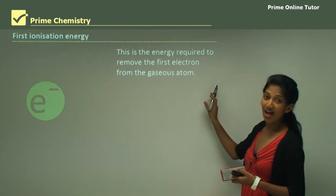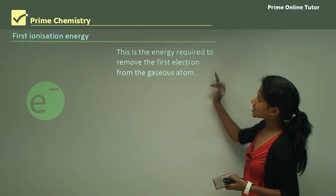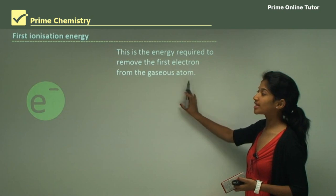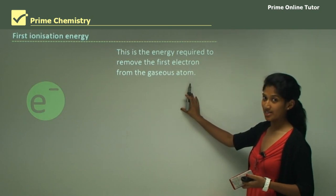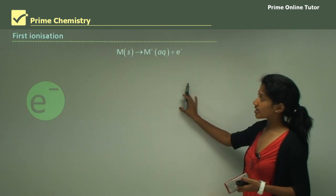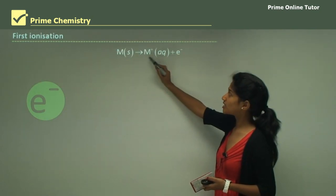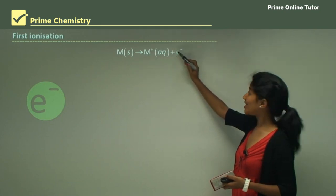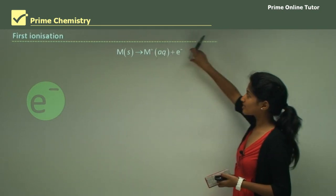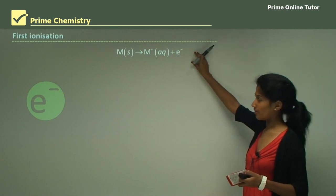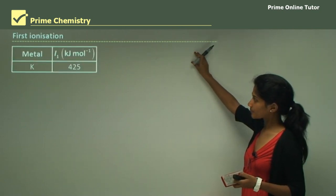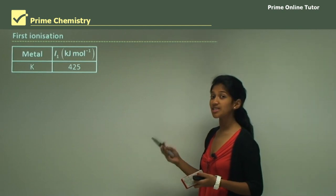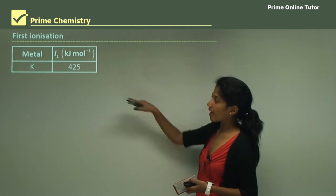The first ionization energy is the energy required to remove the first electron from the gaseous atom. Here we have a metal reacting to form the metal ion and an electron — this represents the giving off of the first electron.